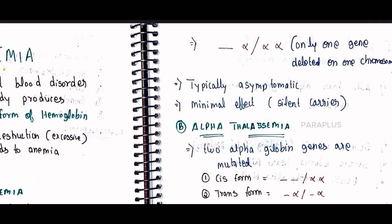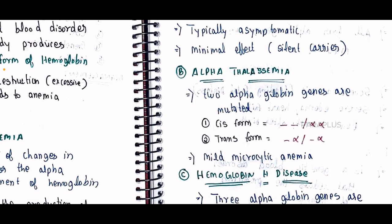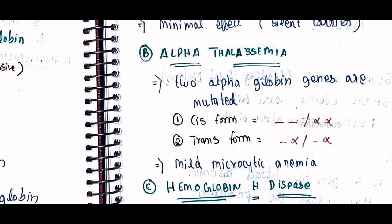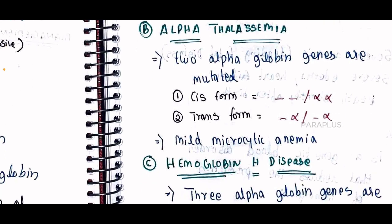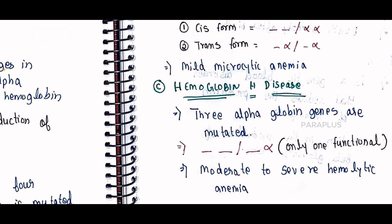Alpha thalassemia trait involves two alpha globin genes missing. There are two forms: the cis form, where both deletions are on one chromosome, and the trans form. This leads to mild microcytic anemia.